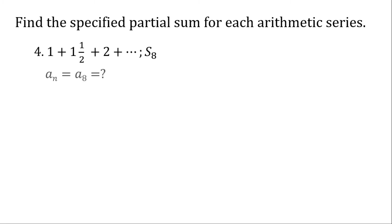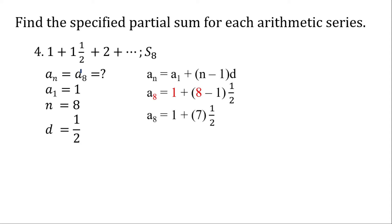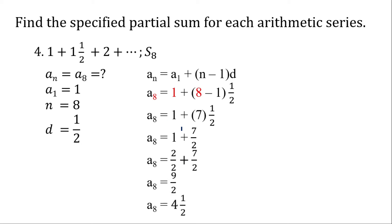Now let's deal with fractions. Let's solve for a sub 8 first. Our first term is 1, our number of terms is 8, and our common difference is 1/2. Substituting: 8 minus 1 is 7, and 7 times 1/2 is 7/2. To add fractions, I need the same denominator — I'll make 1 into 2/2. So 2 plus 7 is 9, giving us 9/2, which as a mixed number is 4 and 1/2.